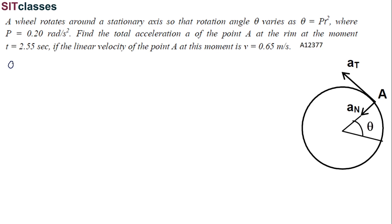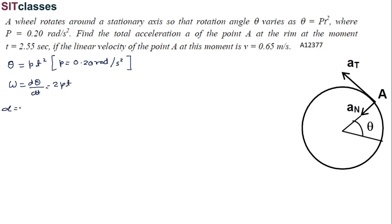So, we have given that theta = p·t² where p = 0.20 rad/s². From the unit 'radians per second square' we can infer this is basically angular acceleration. From this, omega = dθ/dt = 2pt, and alpha = dω/dt = 2p.